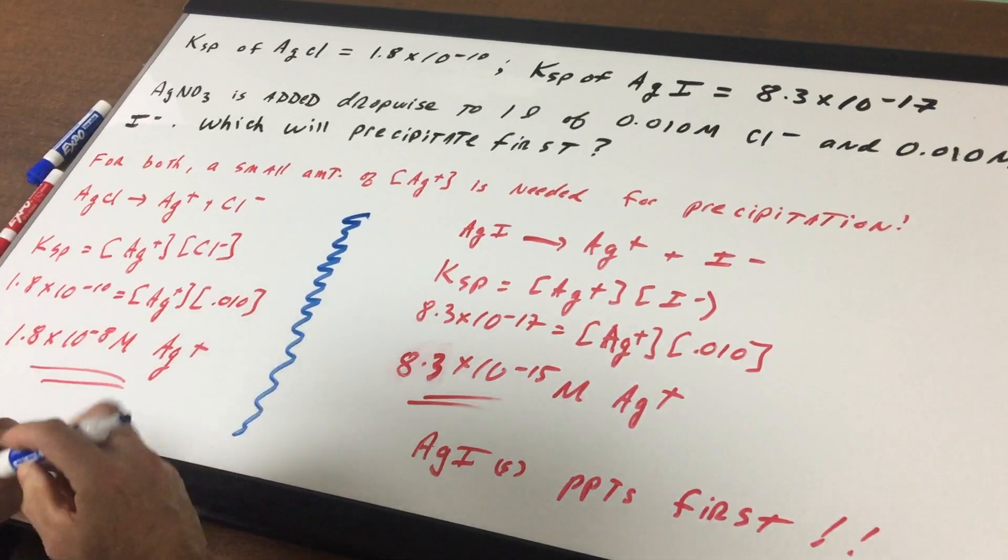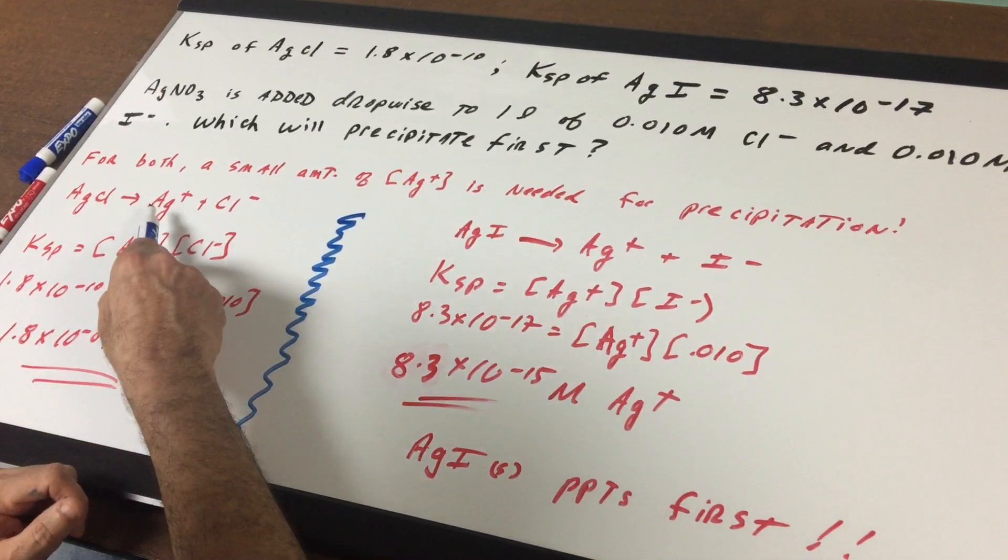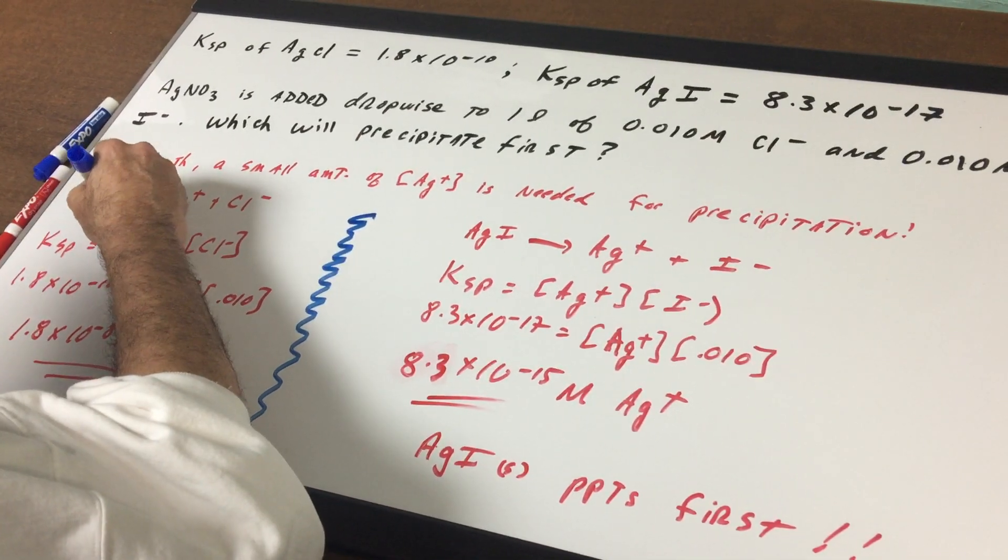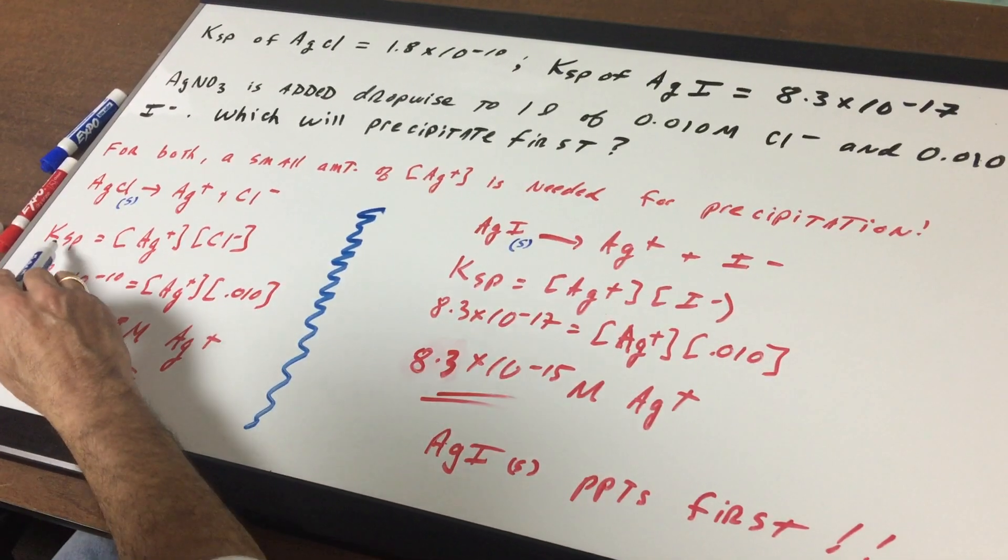So let's take the first salt. We take silver chloride, breaks up into silver and chloride. Up goes the KSP. Remember, anything they give you the KSP for is a solid, so we don't use that in the expression.